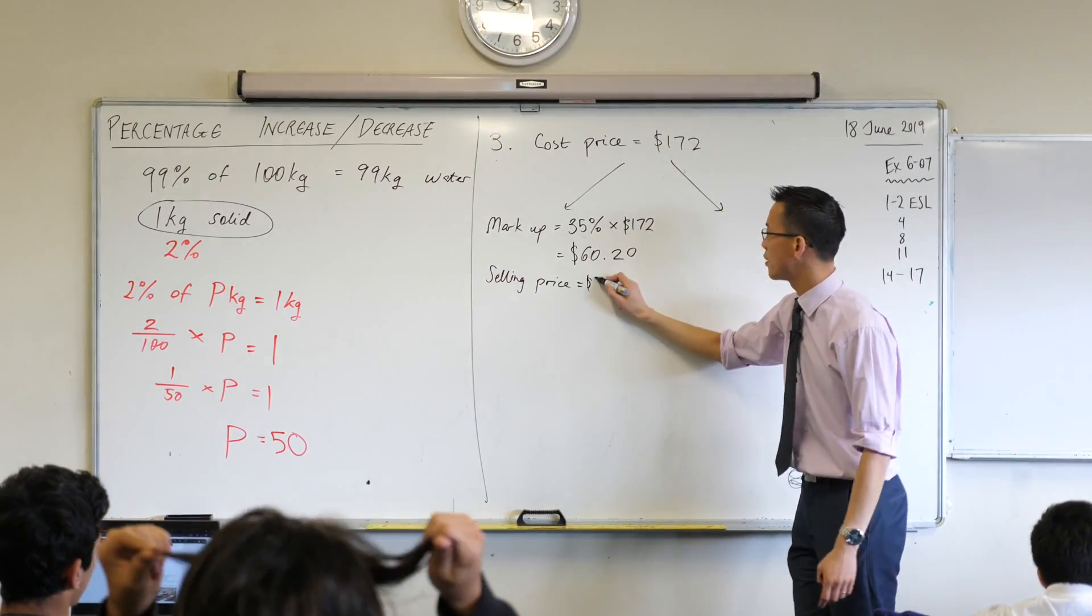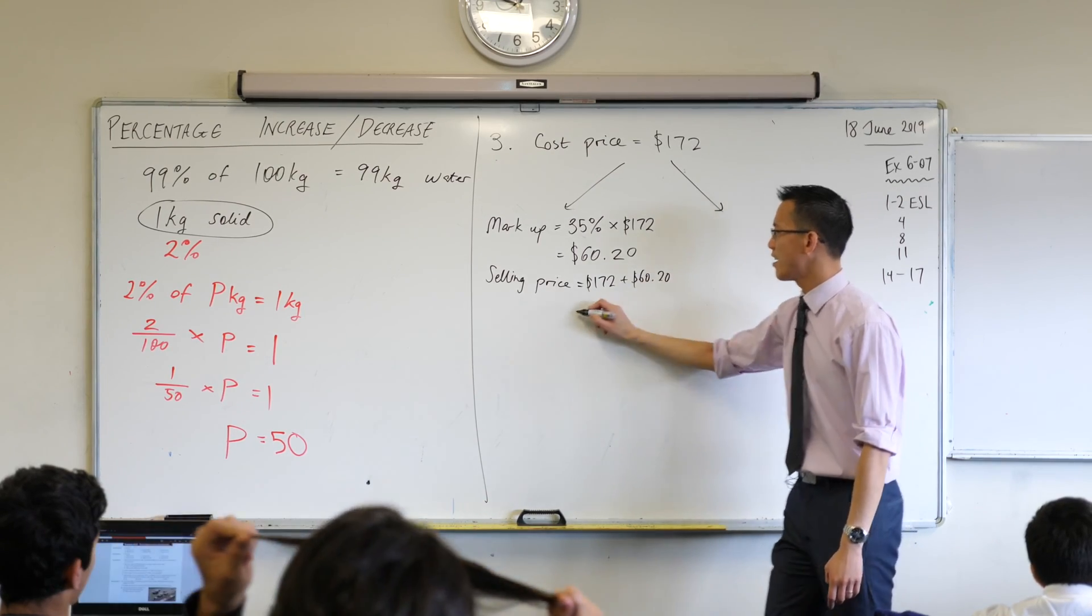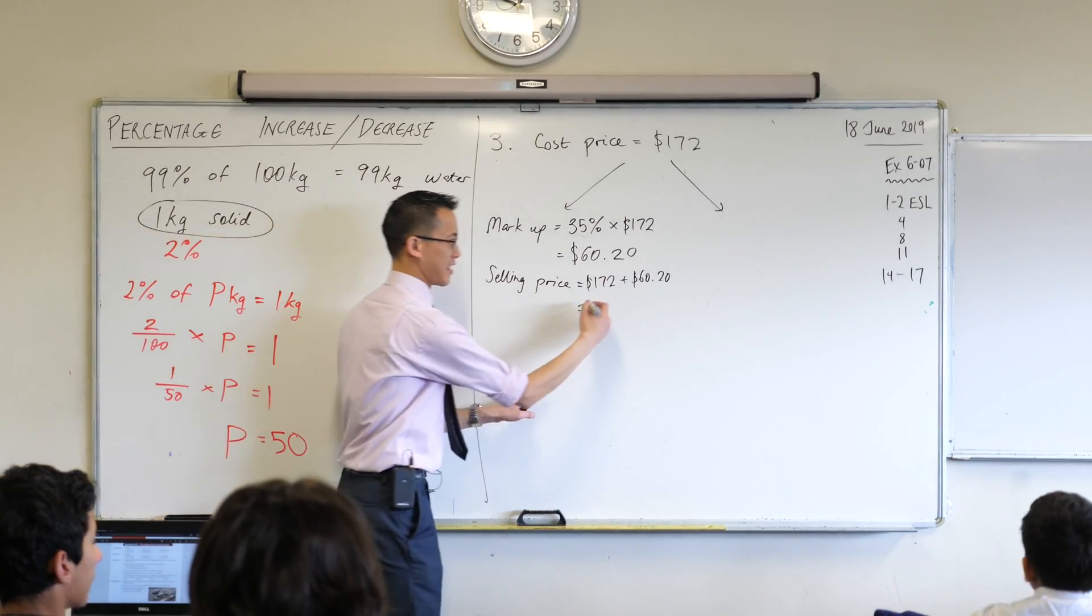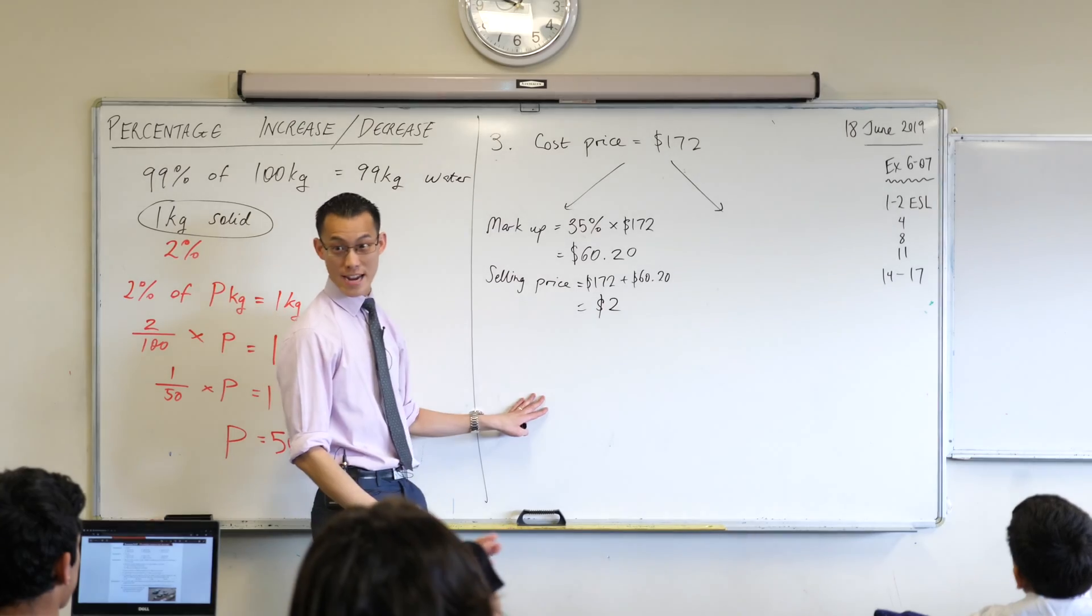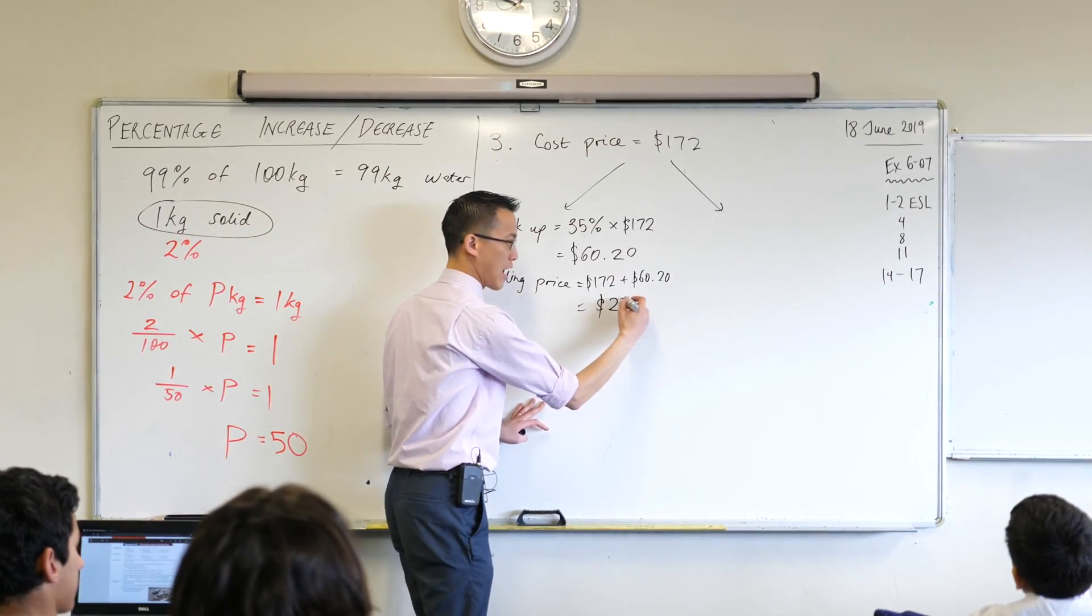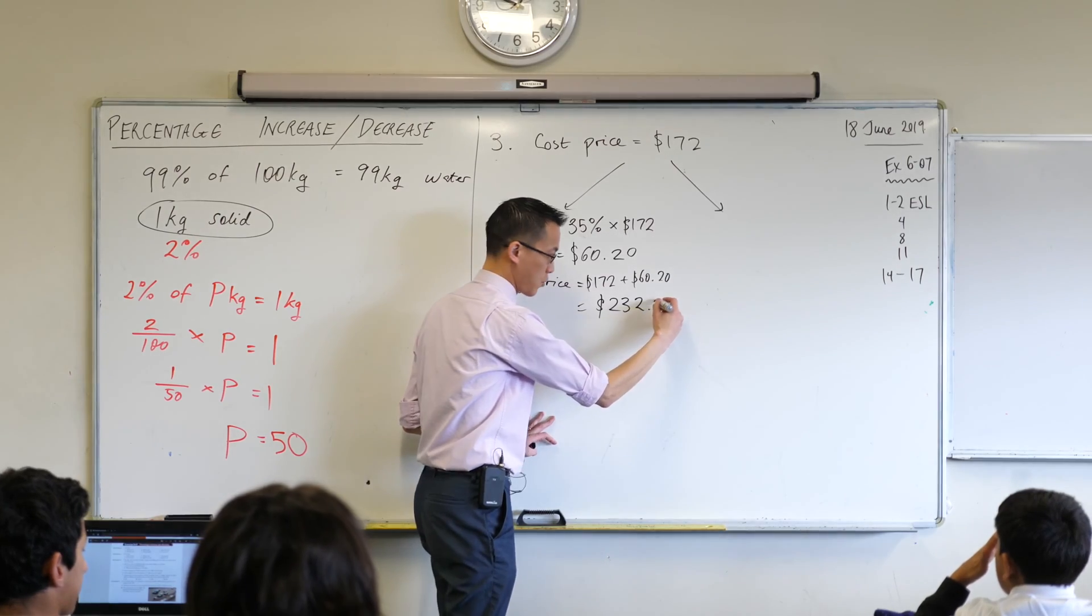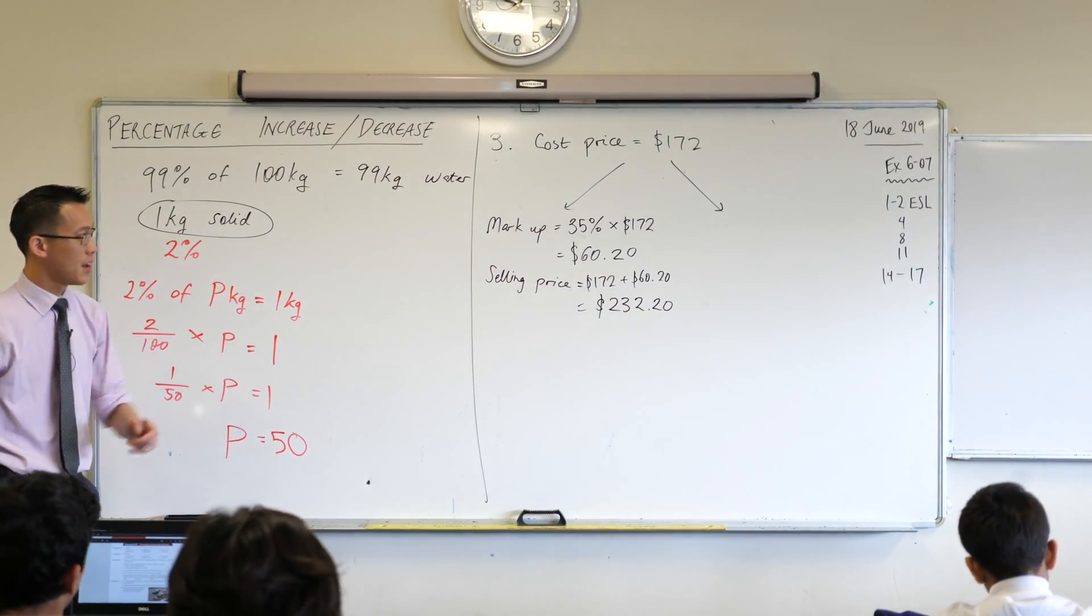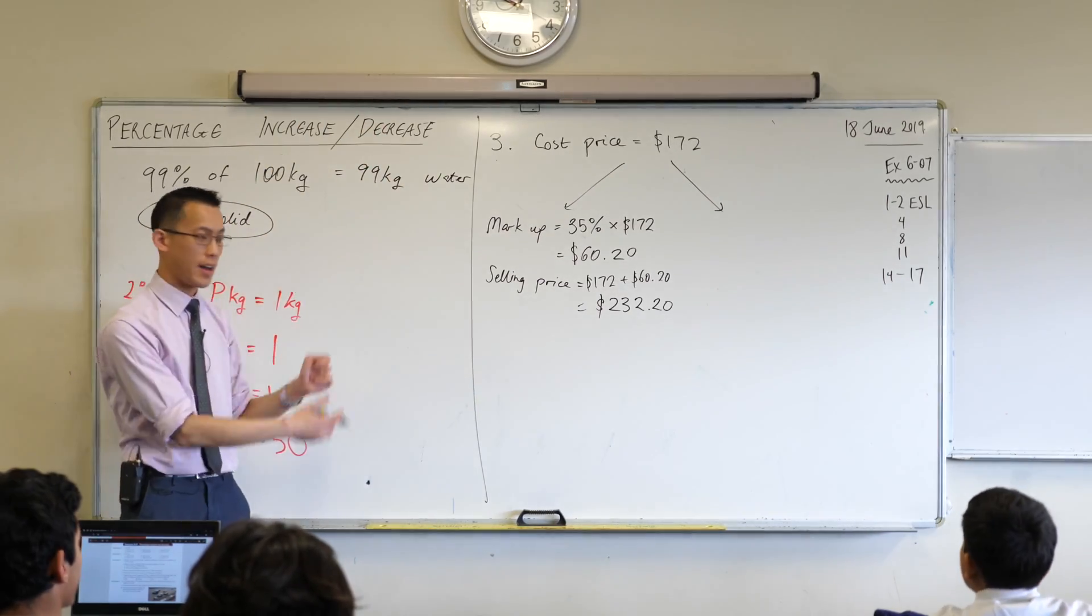And we can write that down firstly, and then we can calculate it. Now I don't think we even need a calculator for this, do we? We can do this in our heads. It's going to start with a 2, 3, 230, 2, and 20 cents. And if you really want, you can verify that on your calculator. Okay, so this means of working it out, perfect. I have my answer down there.